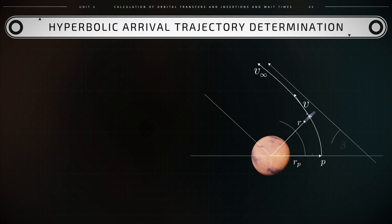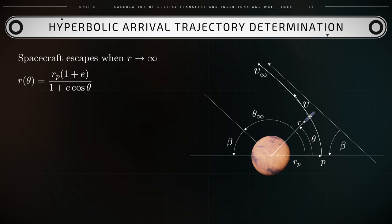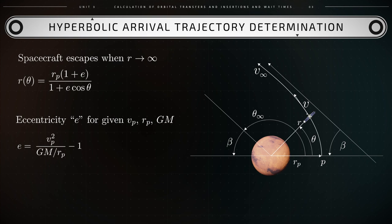To this end, we will use the energy equation and geometry of hyperbolic trajectories. As shown in a previous video, the expressions for such hyperbolic trajectories are given by: r equals rp times (1 plus e) over (1 plus e times cosine of theta), and e equals vp squared over (gm over rp) minus 1. In these expressions, e corresponds to the eccentricity and it exceeds 1, whereas gm is the gravitational parameter of the planet around which a spacecraft would execute a hyperbolic orbit.